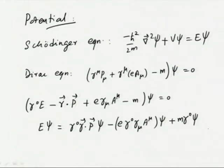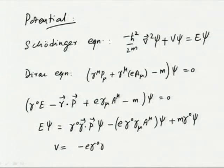Comparing with the Schrödinger equation, the first term is the kinetic energy term and the second term is the potential. The potential V should be positive, so V is equal to minus e γ⁰ γ^μ A_μ. That is the potential appearing in the Dirac equation.